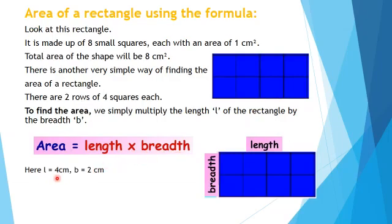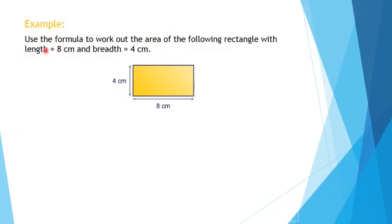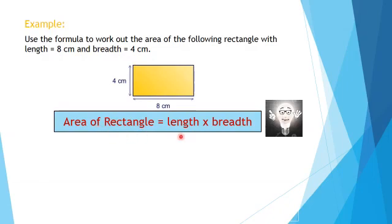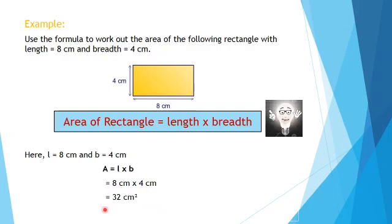Here we have a length of 4 centimeters and a breadth of 2 centimeters. We know that area is equal to length multiplied by breadth, so it will be equal to 4 cm × 2 cm, which is 8 centimeter square. Now, using the formula for another example: with a length of 8 centimeters and breadth of 4 centimeters, area equals 8 cm × 4 cm, so the answer is 32 centimeter square.